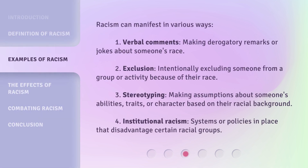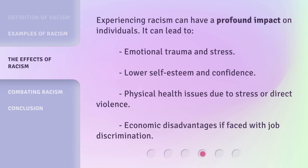Racism can manifest in various ways. One: verbal comments — making derogatory remarks or jokes about someone's race. Two: exclusion — intentionally excluding someone from a group or activity because of their race. Three: stereotyping — making assumptions about someone's abilities, traits, or character based on their racial background. Four: institutional racism — systems or policies in place that disadvantage certain racial groups.